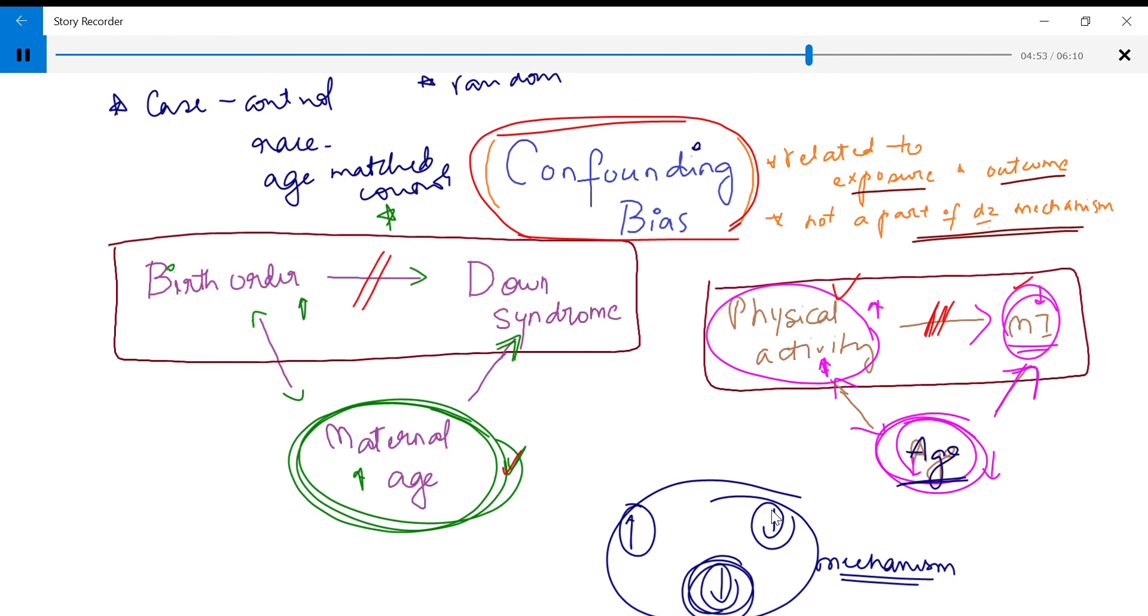And also there is random assignments in which it's blinded in the sense that the patient doesn't know, like when you're doing like drug tests, for example, the patient doesn't know whether you're giving them a placebo or whether you're giving them the actual drug. So random assignment and case control studies, these are the two ways to correct for confounding bias.